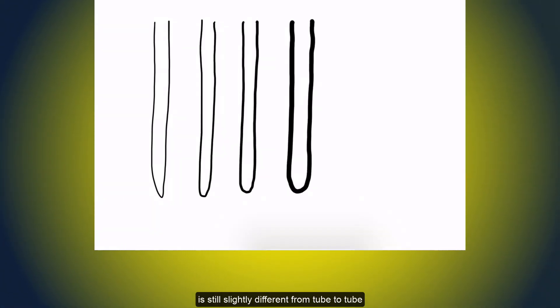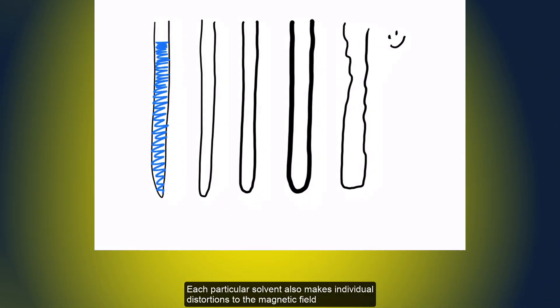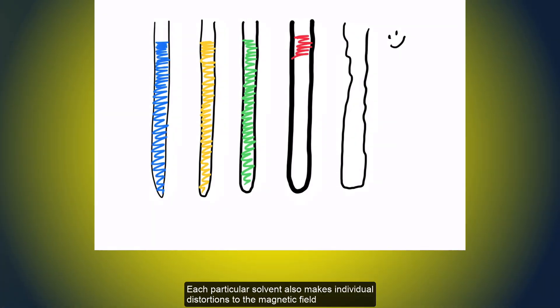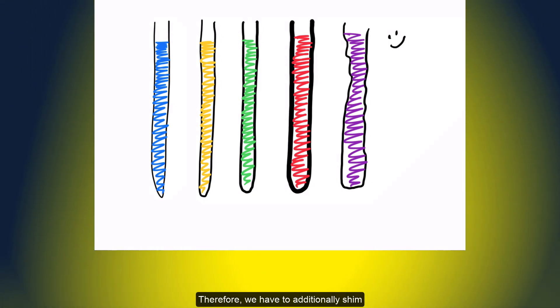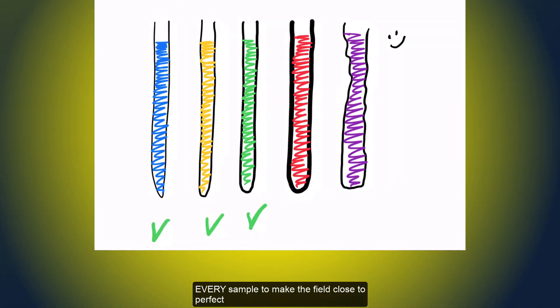However, the NMR tube glass is still slightly different from tube to tube. Each particular solvent also makes individual distortions to the magnetic field. Therefore, we have to additionally shim every sample to make the field close to perfect.